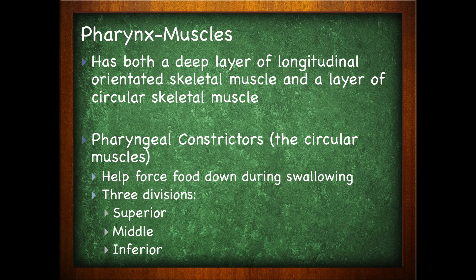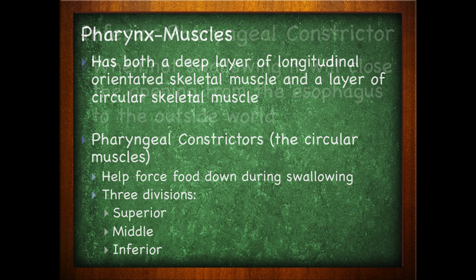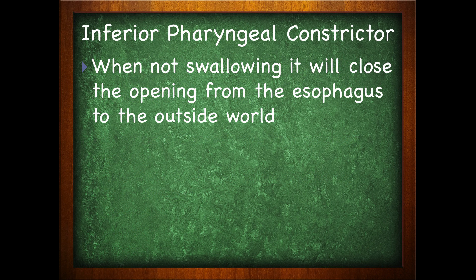There are three subdivisions of the pharyngeal constrictors: the superior, middle, and inferior. The inferior pharyngeal constrictor, when you're not swallowing, will close the opening from the esophagus to the outside world, so it forms a sphincter.